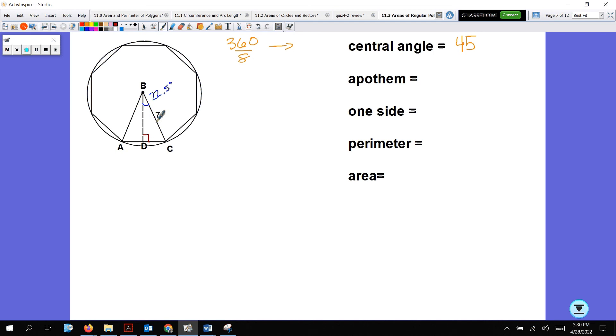If that is adjacent, I have hypotenuse. Adjacent hypotenuse, that is cosine. The cosine of 22.5 is equal to x over 7. 7 times cosine 22.5 is how we're going to find x. 6.5 is the apothem.